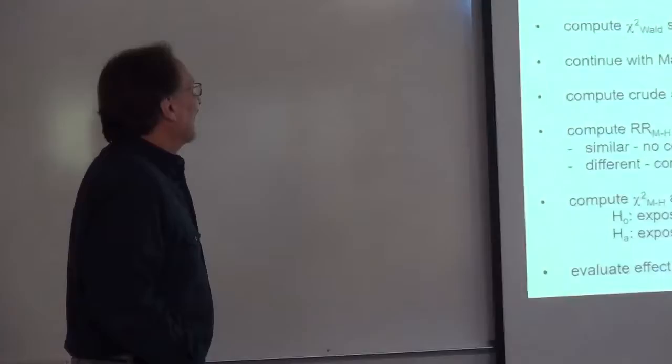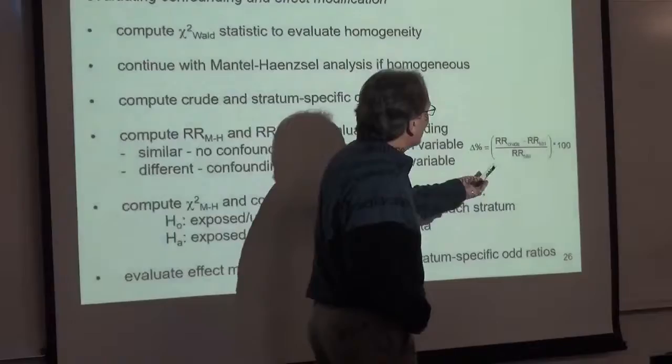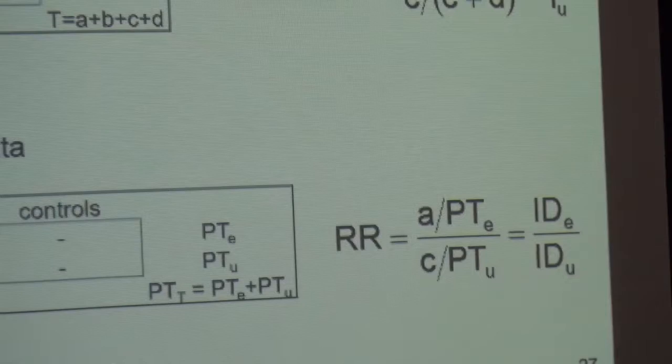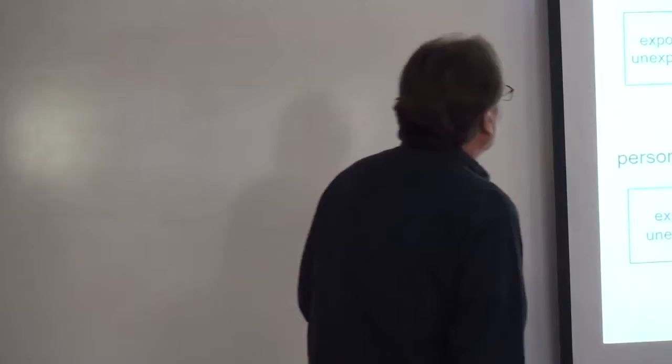Let's talk about stratification with cohort studies. This should look extremely familiar because it's exactly the same process, except now we're talking about relative risks, the delta percent, and crude and Mantel-Haenszel relative risks. As a preface, I'm going to show you two types of denominator data in relative risks when learning them in cohort studies.